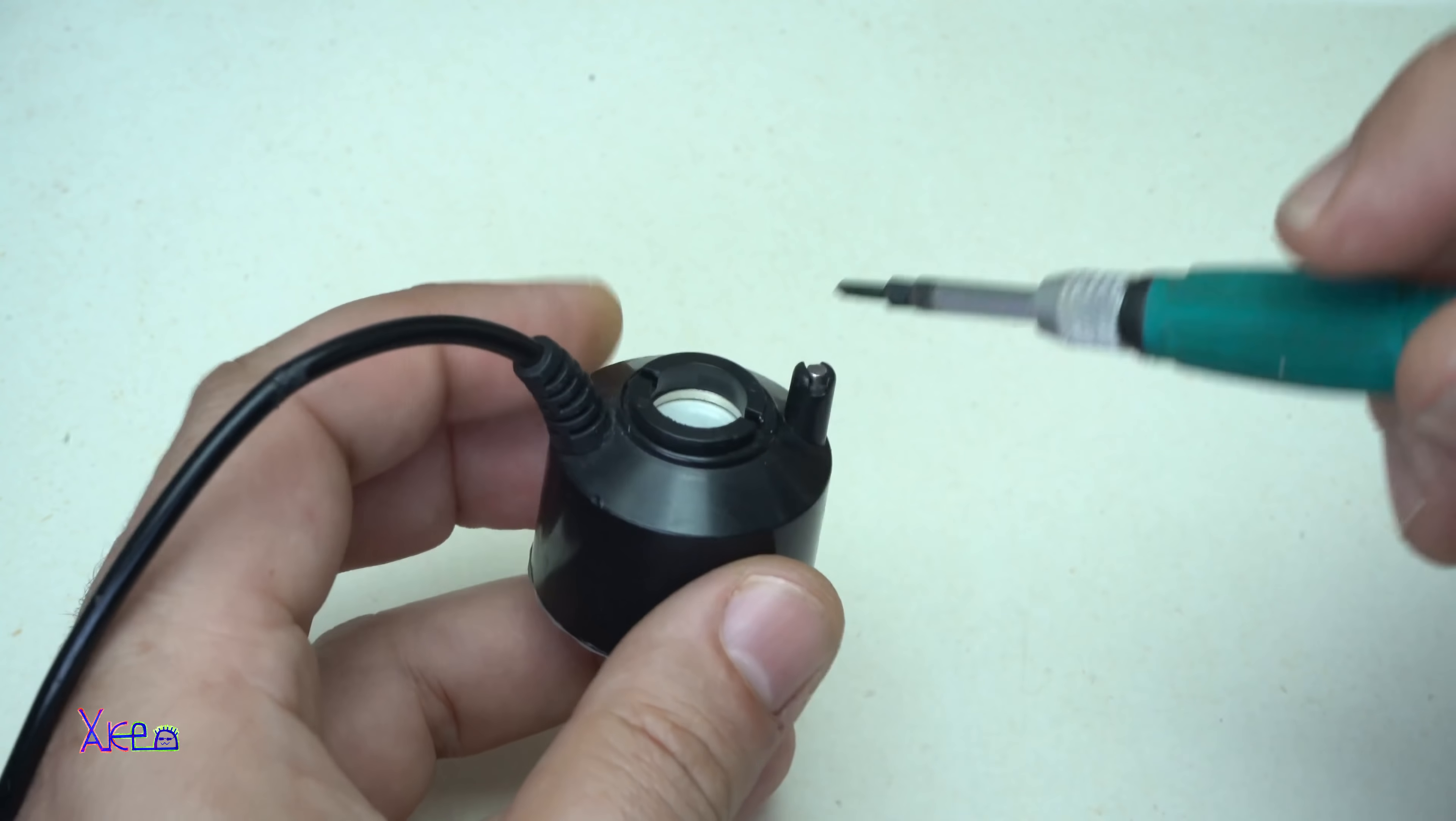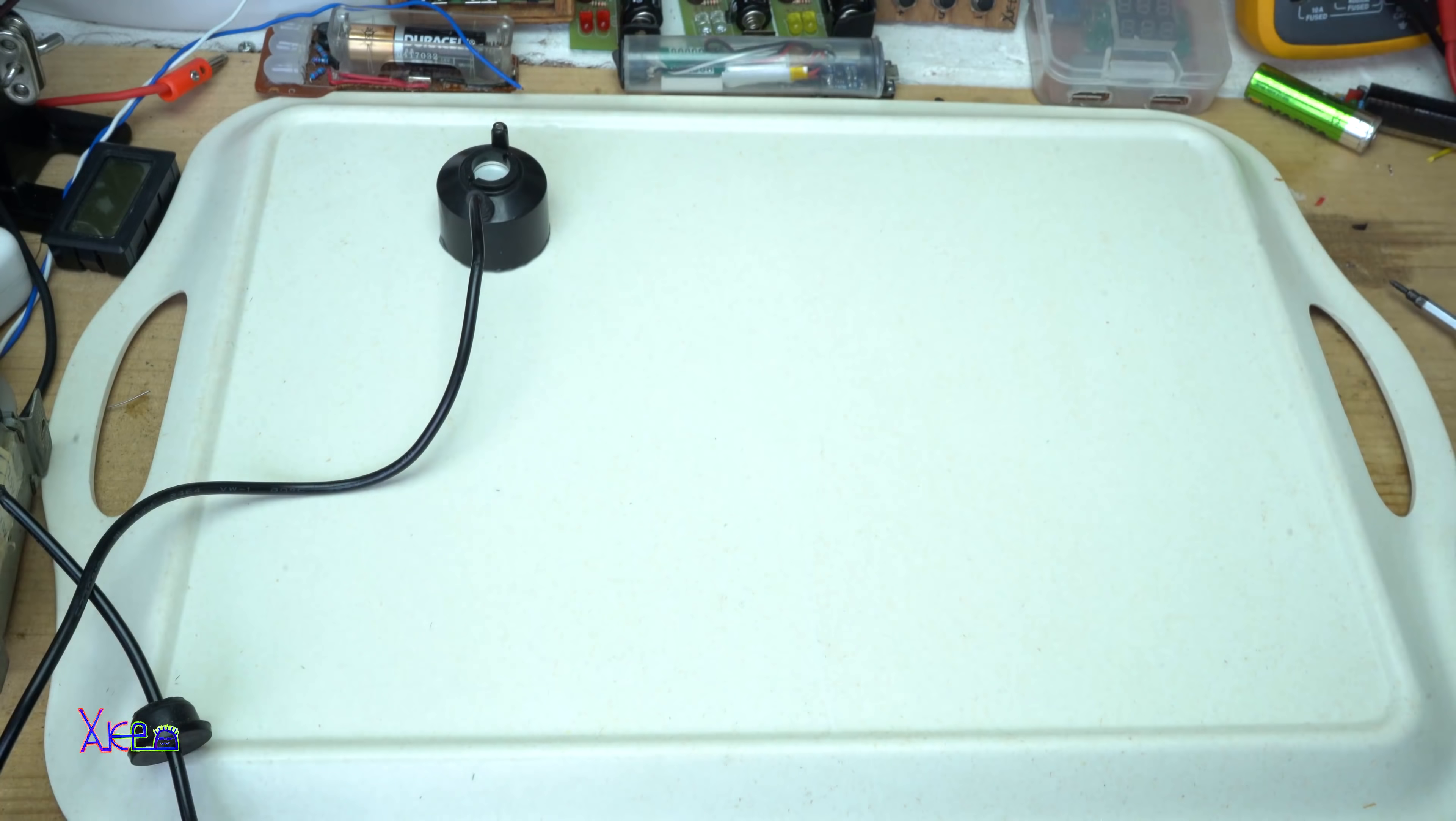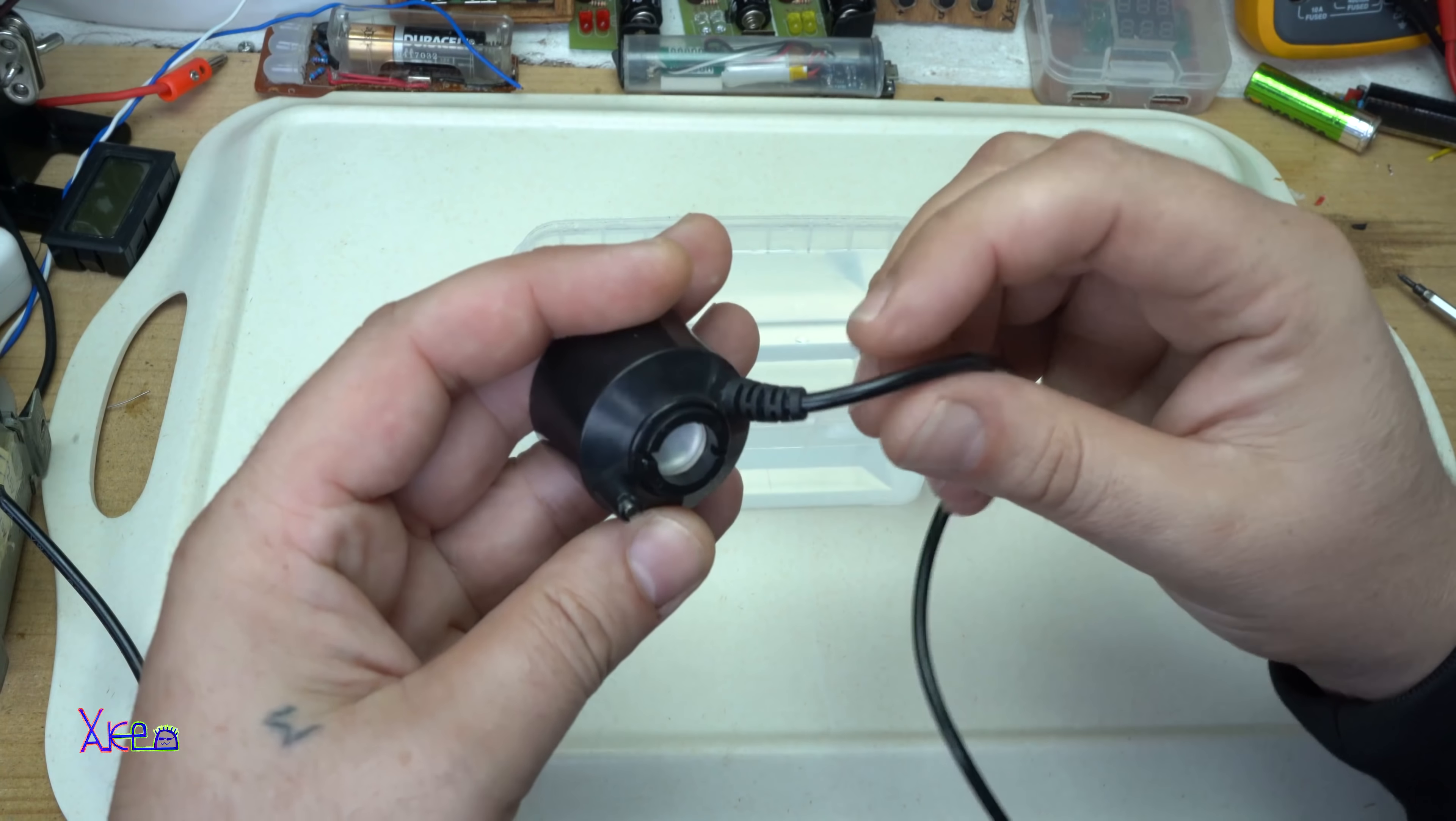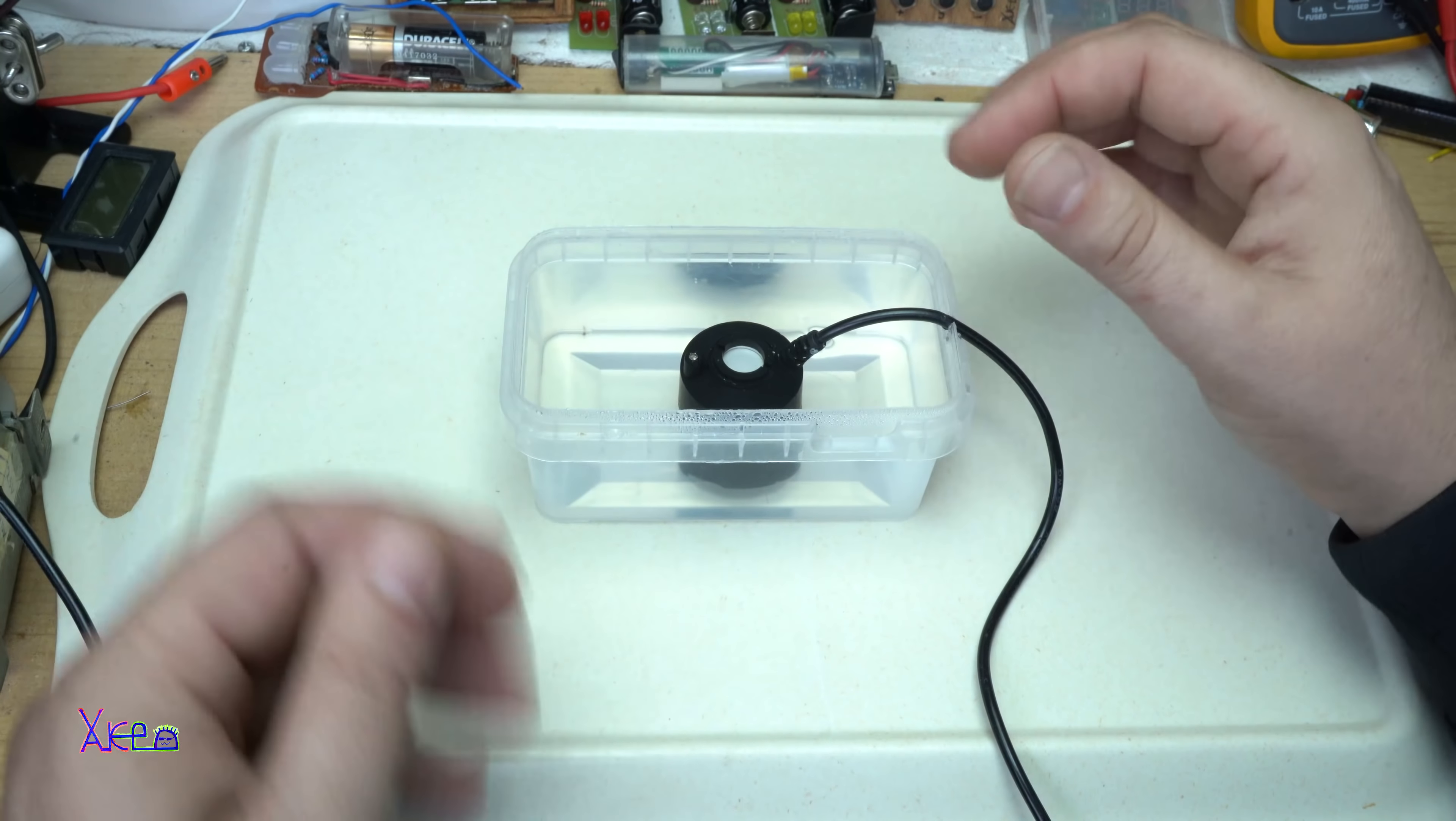I'm gonna try now. The model is connected to my transformer that gives 24 volts. Also you need a plastic container with water, boiled water or distilled water. Next thing is to place the ultrasonic model into the container just like this, and now I'm gonna turn it on.